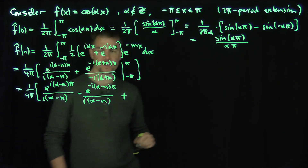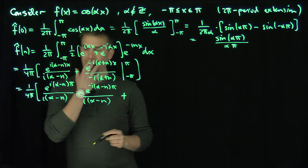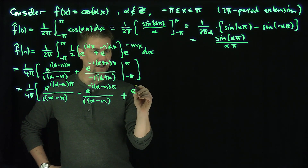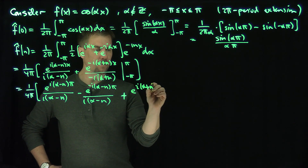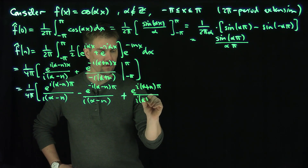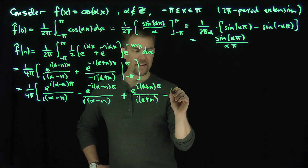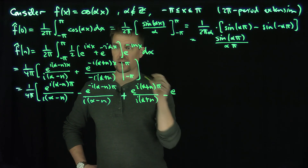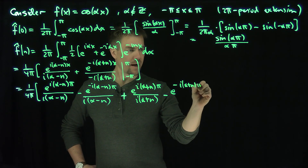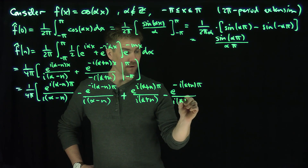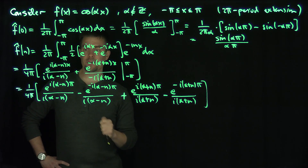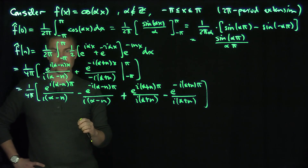Plugging in the limits carefully, I have 1 over 4π. The first term gives e^(i(α-n)π) over i(α-n), minus e^(-i(α-n)π) over i(α-n). Then putting the negative sign in first to clear the denominator, the second pair gives e^(i(α+n)π) over i(α+n), minus e^(-i(α+n)π) over i(α+n).